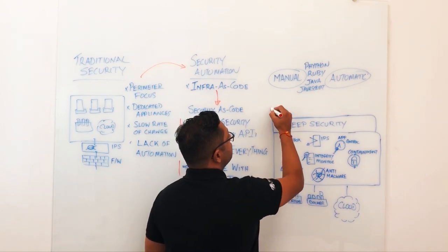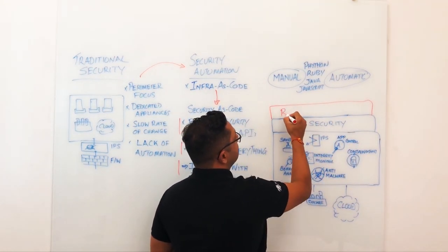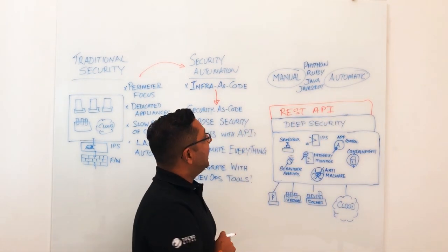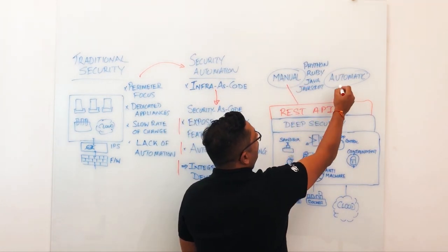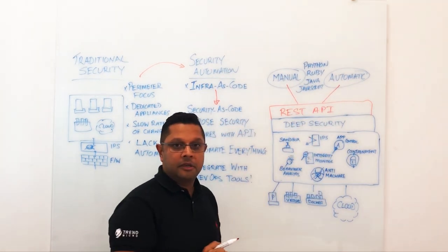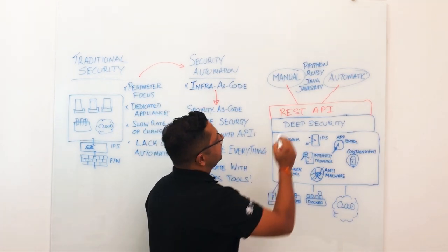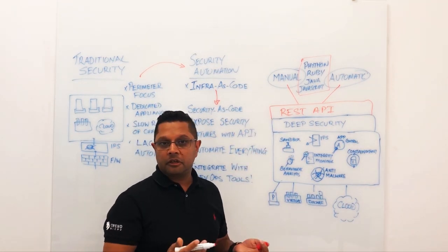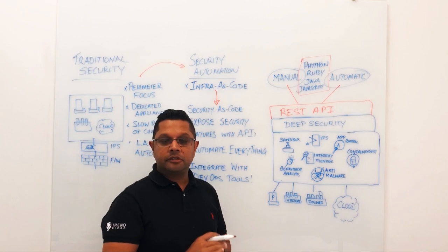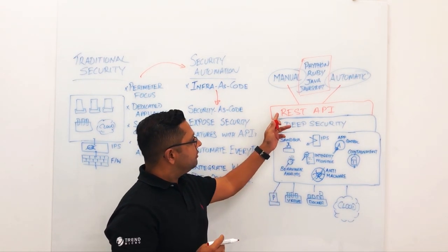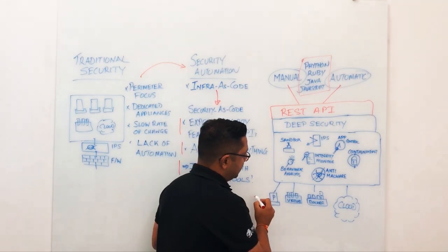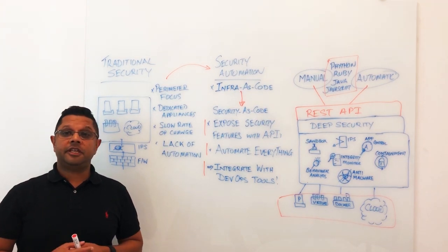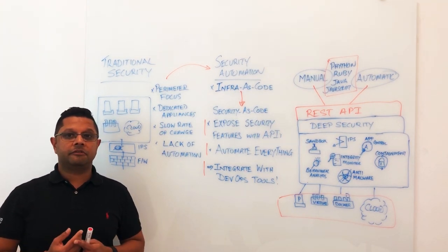What we've done is created a rich set of REST APIs that allow either manual or automatic triggers to instrument change. Those triggers can be coded up in common coding languages like Python, Ruby, Java, and JavaScript. What you can do is mass deployment and mass change through the API onto the platform across that hybrid infrastructure.